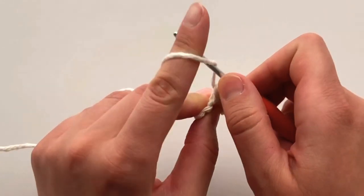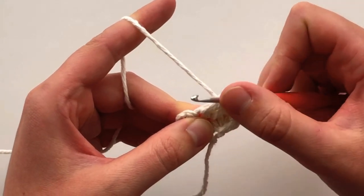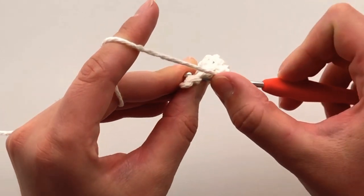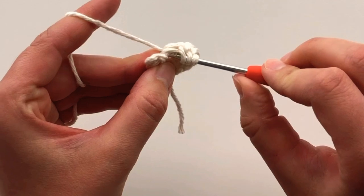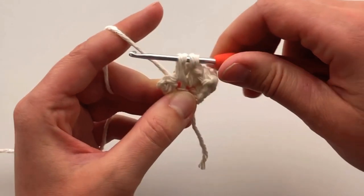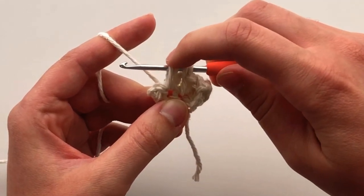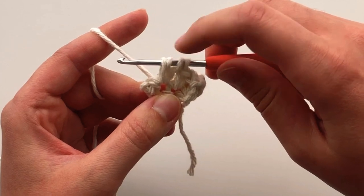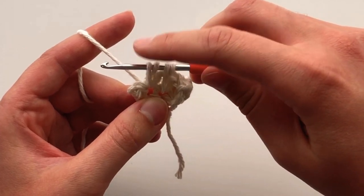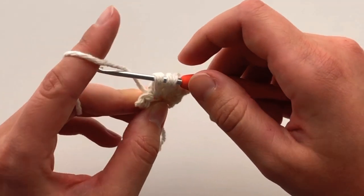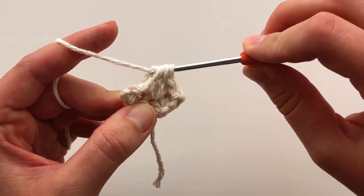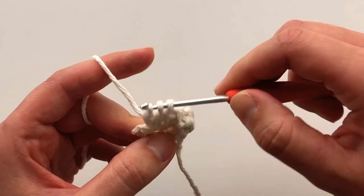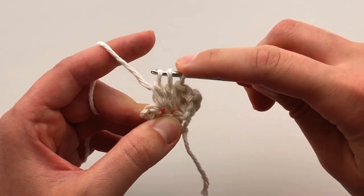We are going to yarn over, and do the same thing again. Insert your hook, yarn over, pull through. We now have 4 loops on our hook. Yarn over, and pull through the first 2 loops. You now have 4 loops on your hook.